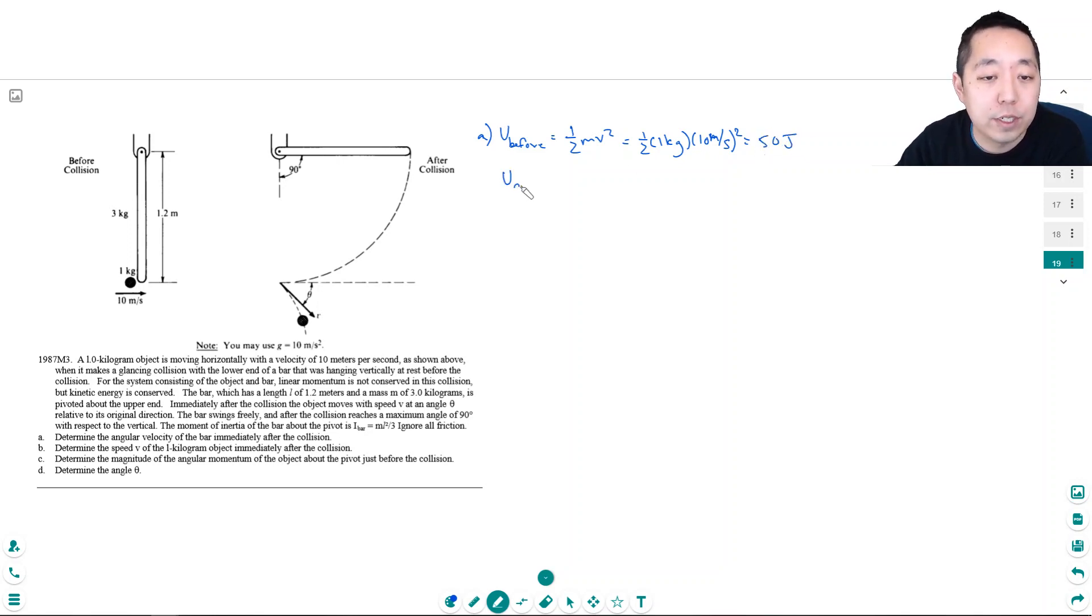Okay? Now after, right after the collision the energy is the same. And it shoots off with a one half mV squared. Because this thing still has kinetic energy. But this thing now has some rotational energy. This rotational energy is one half I omega squared. I know what I is. I is mL squared over 3. And omega squared. Omega is what I'm trying to solve for, right?